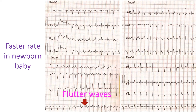When atrial flutter occurs in a newborn baby, the flutter rate is higher, just like the normal heart rate in a baby, which is higher than in an adult. In the ECG shown, the rate in the upper chambers is above 400 per minute and in the lower chambers above 200 per minute. This also shows 2 to 1 conduction from upper chambers to lower chambers across the AV node, and it is more difficult to notice the flutter waves in this case.